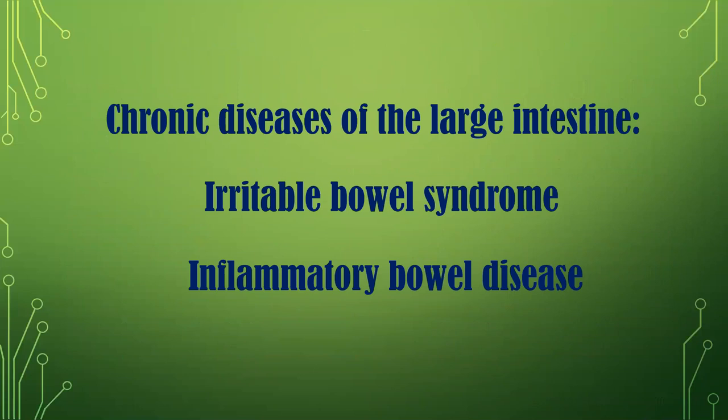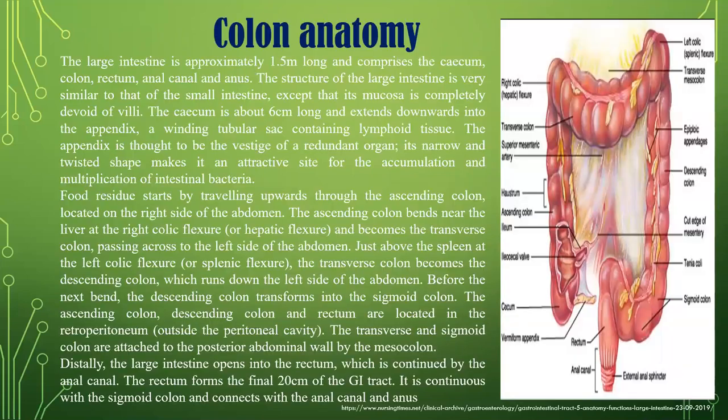Now, large intestine disorders — we will talk about irritable bowel syndrome and the group of inflammatory bowel diseases. The large intestine is approximately 1.5 meters long and comprises the cecum, colon, rectum, and anal canal. The structure of the large intestine is very similar to that of the small intestine, except that its mucosa is completely devoid of villi. The cecum is about six centimeters long and extends downward into the appendix, a winding tubular structure containing lymphoid tissue.